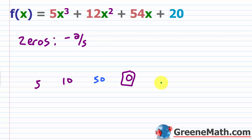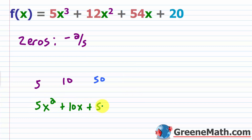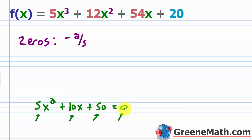Since we synthetically divided by x plus 2 fifths (that is, x minus negative 2 fifths), the result is the quadratic 5x squared plus 10x plus 50. To find where this equals zero, we can divide everything by 5 to get x squared plus 2x plus 10 equals zero, which makes the numbers easier to work with.